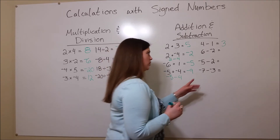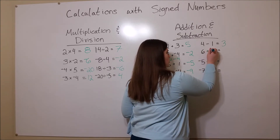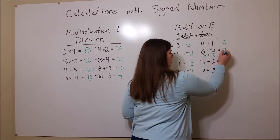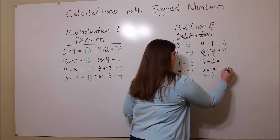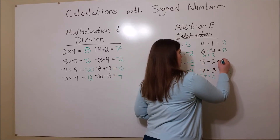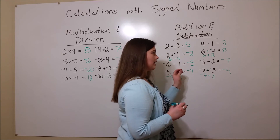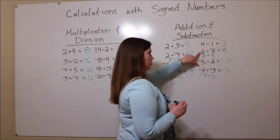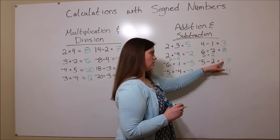With subtraction, whenever you have minus a negative, you can actually turn it into a plus. For example, 6 minus a negative 2 can be written as 6 plus 2, which equals 8. And negative 7 minus a negative 3 can be rewritten as negative 7 plus 3, which equals negative 4. It's a little easier when there's just a minus a positive. Negative 5 minus 2 equals negative 7. Again, we see that same rule holds true: in addition and subtraction, whatever the sign of the largest number is, the sign of the answer will be the same. The largest number is positive, the answer is positive. The larger number was negative, so the answer is negative.